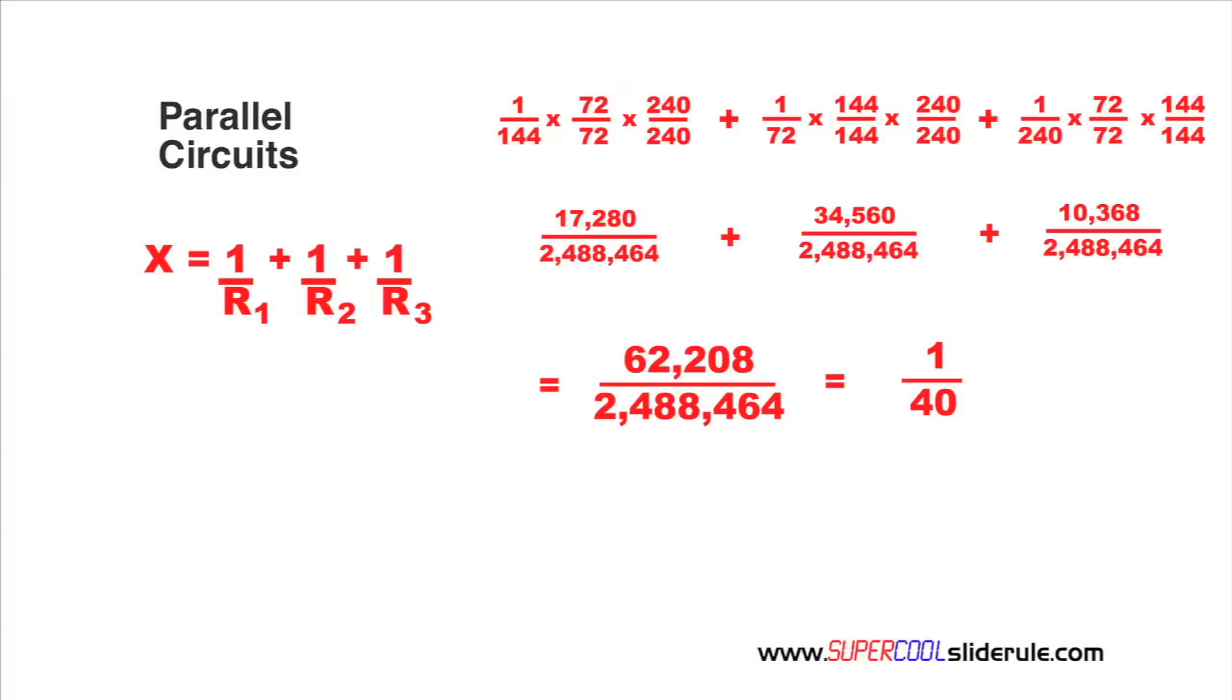Now, referring back to our formula, we see here that x is actually equal to the reciprocal of what our answer is. Now, our answer is 1 over 40. To get any reciprocal, all we do is flip the fraction upside down. In this example, we flip it upside down, we end up with 40 over 1. And 40 over 1, if you'll recall, is just 40. So, the resistance of this circuit should be 40 ohms.